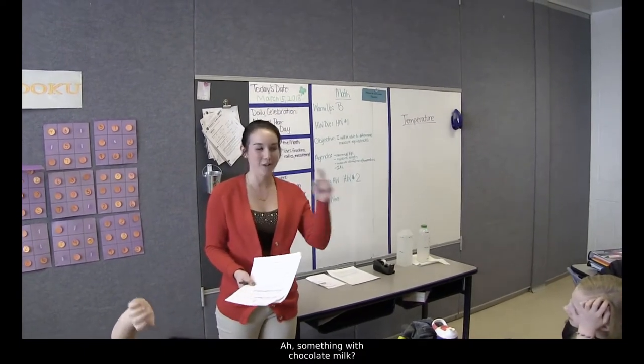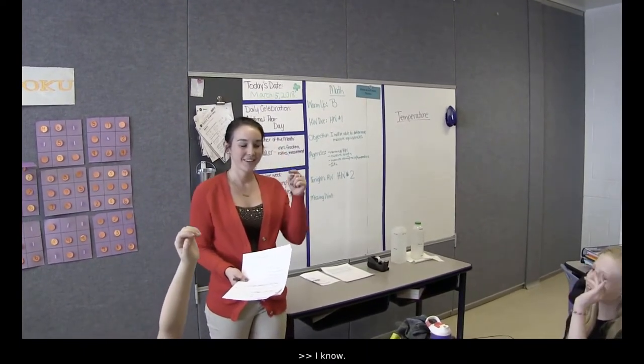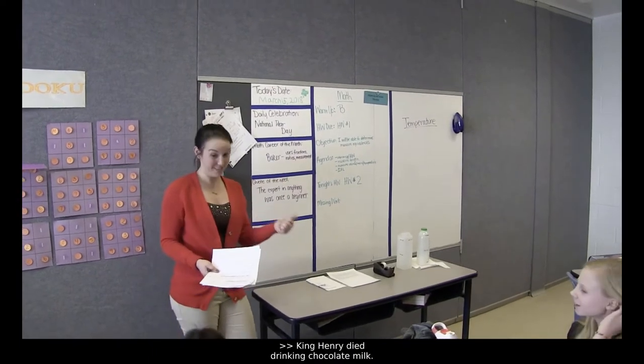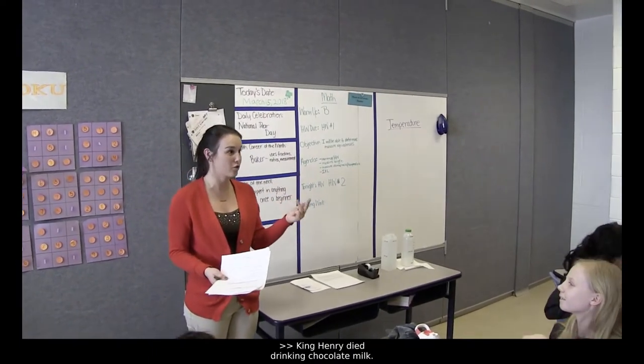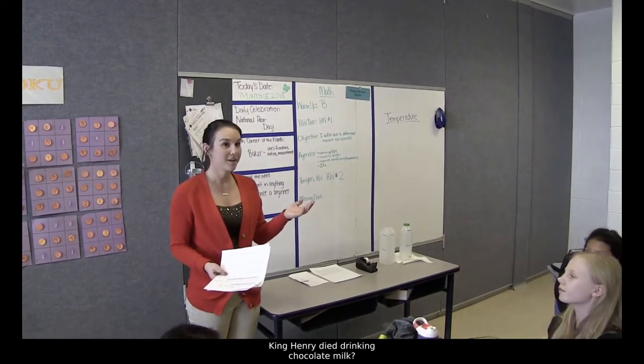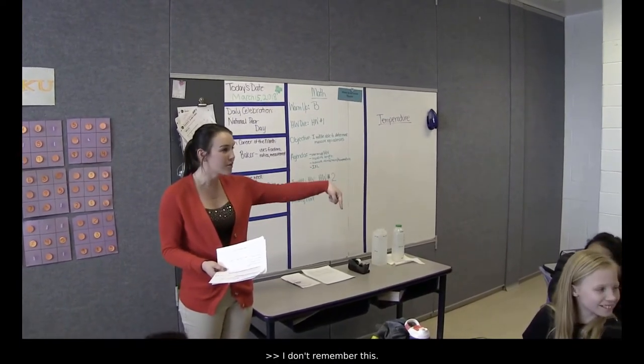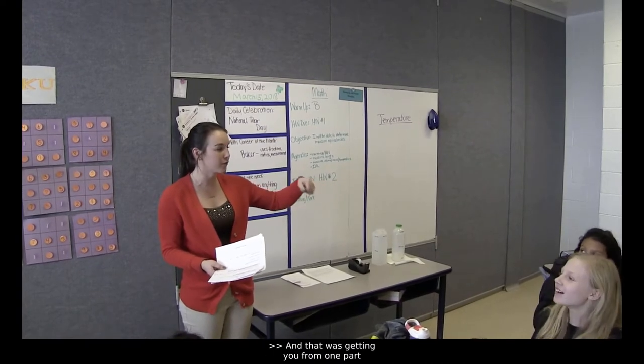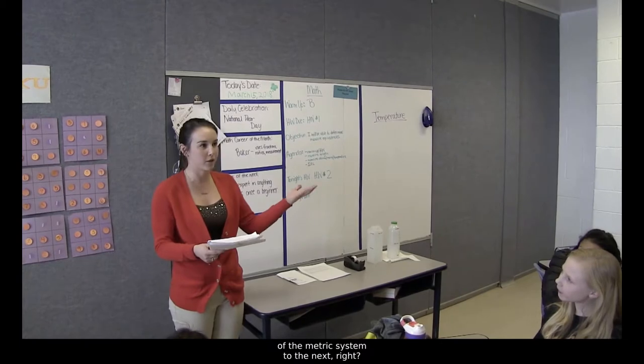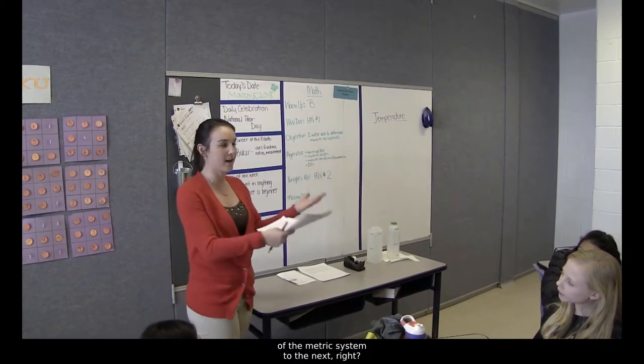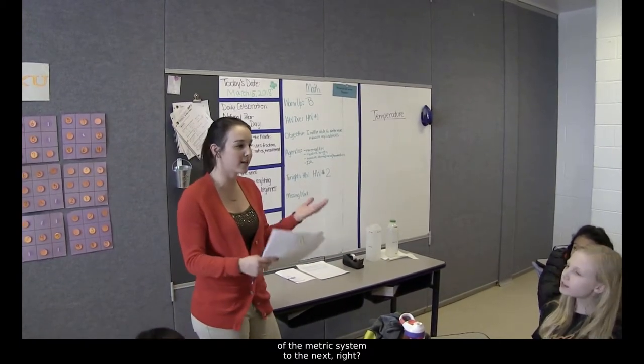Something with chocolate milk? What was it? King Henry died drinking chocolate milk. Good! So do you remember King Henry died drinking chocolate milk? And that was getting you from one part of the metric system to the next, right? From smaller units to bigger units. But this time we're not going just metric to metric. We're going metric to customary, and so that's what we're going to look at today.